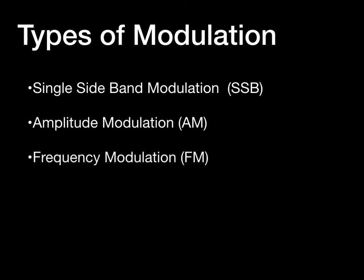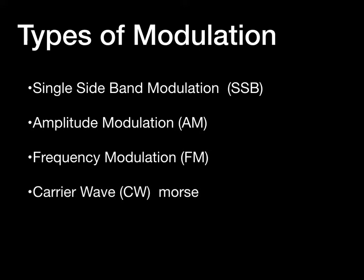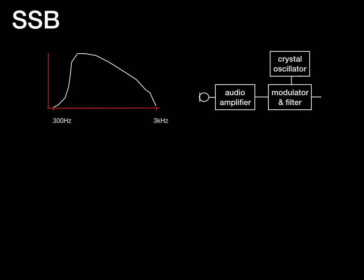In the next part of this video we're going to look at different types of modulation: single sideband (SSB), amplitude modulation (AM), frequency modulation (FM), carrier wave modulation (CW) otherwise known as Morse, and data modulation. Let's start with SSB. There's our audio spectrum — 300 Hz to 3 kHz — and there are the left-hand three blocks from the generic transmitter block diagram.